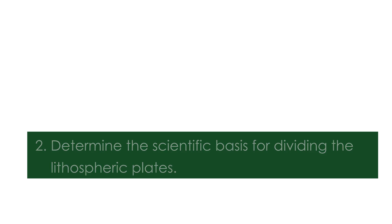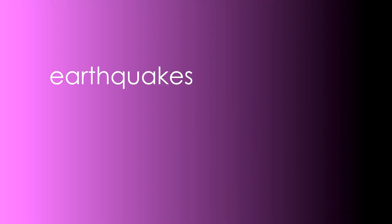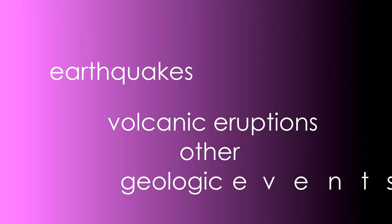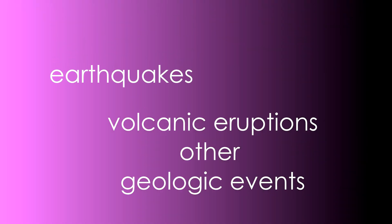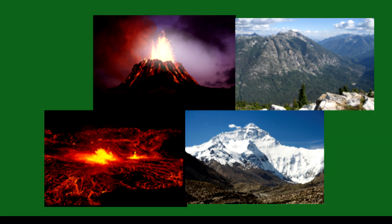We know that the Philippines is part of the Pacific Ring of Fire. This means that our country is prone to earthquakes, volcanic eruptions, and other geologic events. How are volcanoes, mountain ranges, and earthquakes' epicenters distributed on the map? Let's find out.